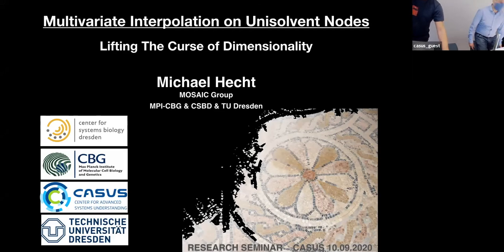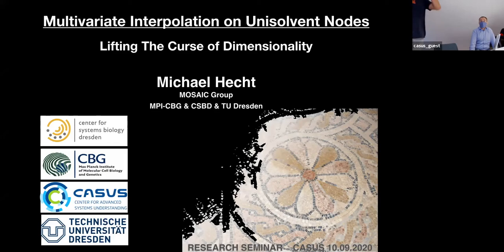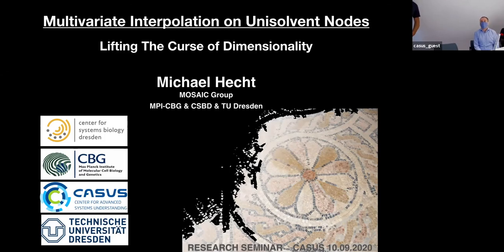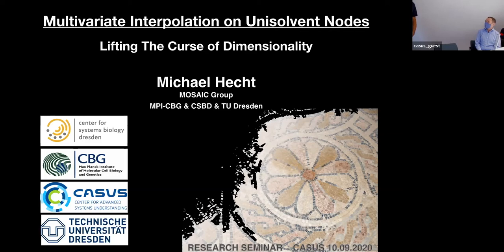It's my pleasure to introduce Michael Hecht from the Mosaic Group, MPI-CBG, CSPD in Dresden. Michael is now a regular here, so I'm very happy he's coming in again and presenting his progress on multivariate interpolation, which will totally kill off AI in the long run and we won't need anything anymore than just this method.